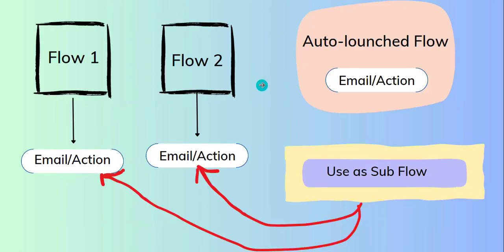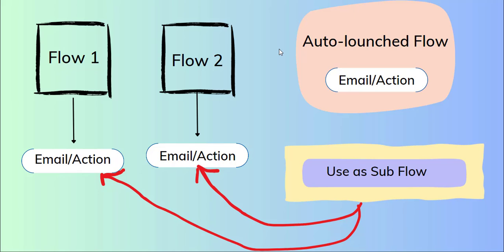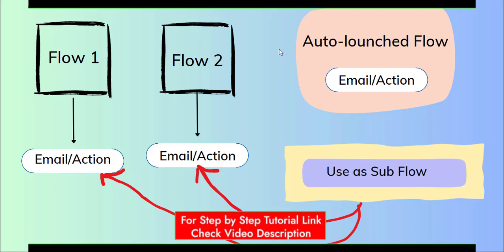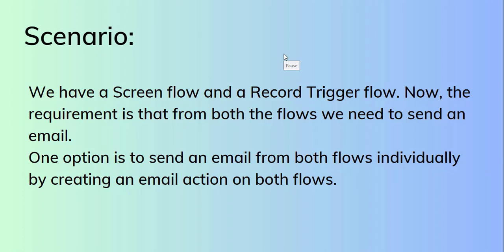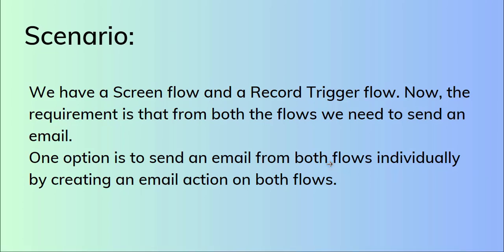Let's understand using a diagram. We have a screen flow and a record trigger flow, and the requirement is that from both flows we need to send an email. One option is to create an email action individually on both flows, but instead we can use an auto launch flow as a sub-flow. On this auto launch flow we create the email action, and then invoke it from the other flows whenever needed. We'll now jump to the Salesforce org to implement this.